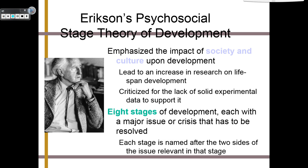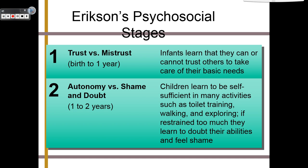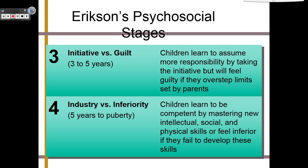The first stage is trust versus mistrust, from birth to about one year old — infants learn that they can or cannot trust others to take care of their basic needs. From one to two years old is autonomy versus shame and doubt — children learn to be self-sufficient in activities like toilet training, walking, and exploring, but if they're restrained too much, they learn to doubt their abilities and feel shame. By three to five years old is the initiative versus guilt stage — children learn to assume more responsibility by taking the initiative, but will feel guilty if they overstep limits set by parents. From five years old to about puberty is industry versus inferiority — also the age of elementary school. Children will learn to be competent by mastering new intellectual, social, and physical skills, or they'll feel inferior if they fail to develop these skills.